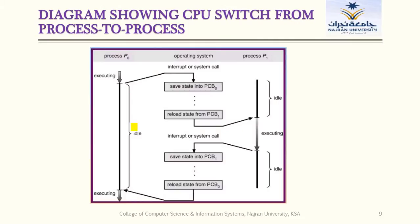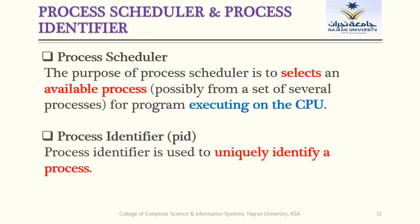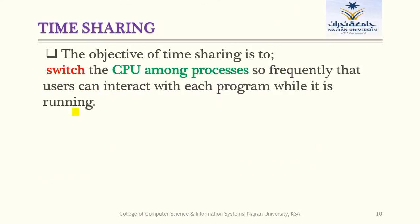We also saw a CPU switch from process to process. Whenever we stop any process, we need to save its current state into the process control block. Whenever we start any process, we have to reload its state from the process control block. We then discussed time sharing — the objective of time sharing is to switch the CPU among processes so the user can interact with each process while it is running.